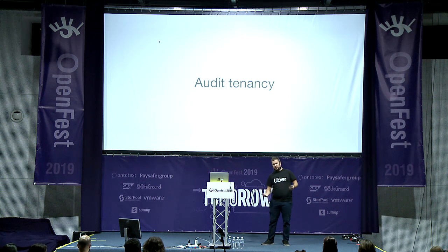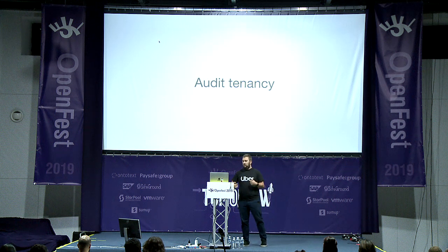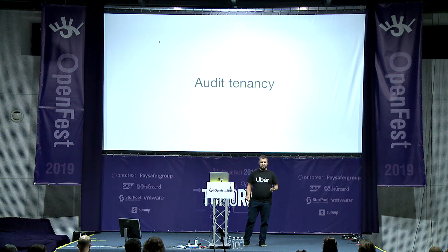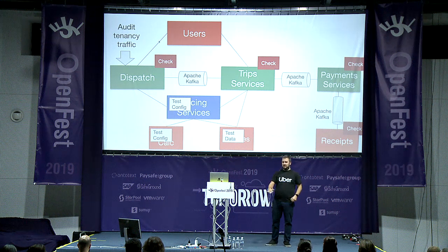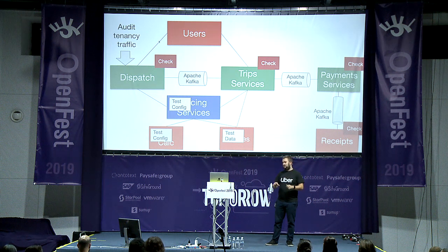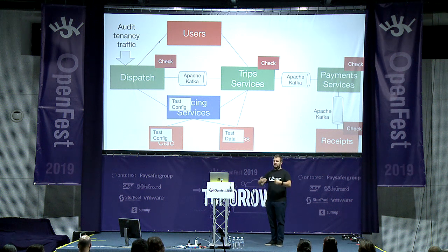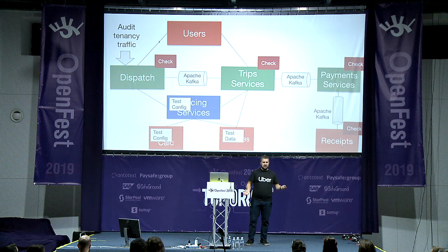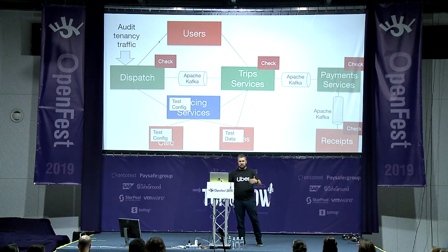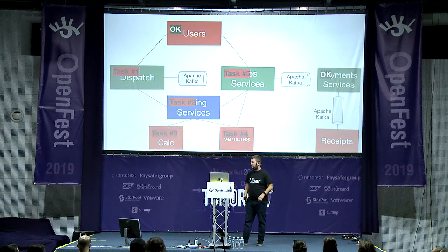Another type of tenancy is audit tenancy — think of it as the immune system of your system. When something happens, audit tenancy traffic can detect in production that something is off. You inject audit tenancy traffic, put checks in each service, and when you get audit tenancy trip type 3, you know what should happen. You can put invariants in your code to always test that the thing being audited is working. It's really helpful when something breaks on a business logic level.